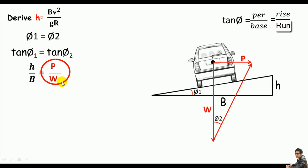v²/gR. So I can say h/B equals v²/gR. Multiplying both sides by B, we get h equals Bv²/gR, or